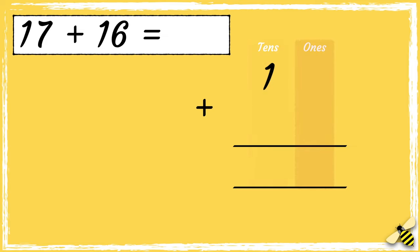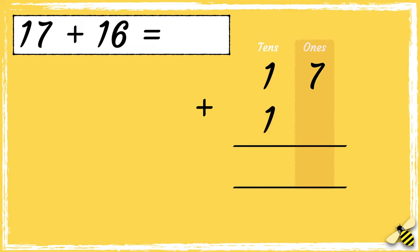The number 17 has one ten and seven ones. The number 16 has one ten and six ones. So now our column addition is set up and we can add the digits in each column. When we add numbers using column addition, we always start from the right hand side.